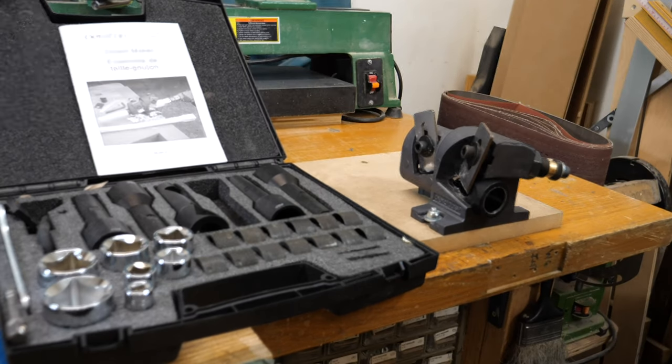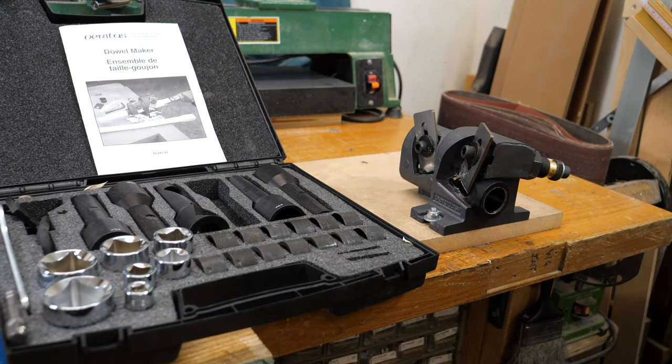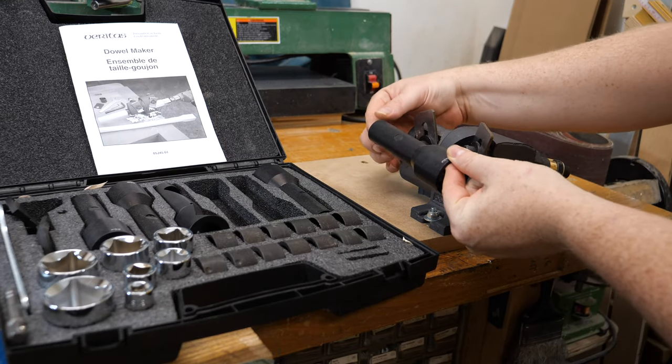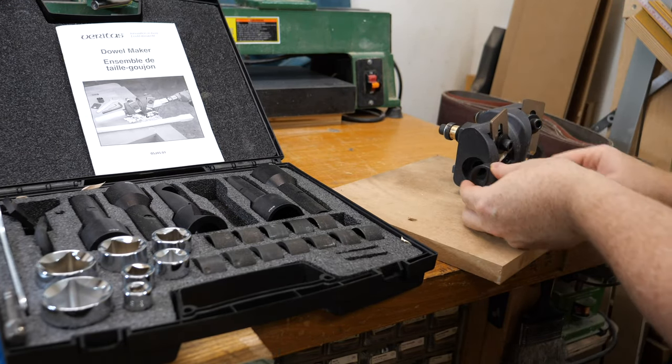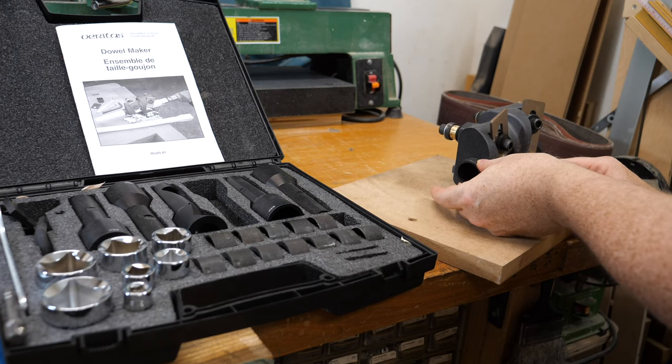Here we have the Veritas dowel maker. The main parts are this insert which guides the wood as it goes through the cutters. We have these bushings that go on the back that guides the wood as it comes out so it doesn't wobble all over the place.